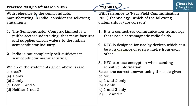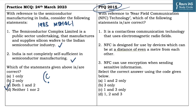On similar lines, we have framed one practice MCQ: with reference to semiconductor manufacturing in India, consider the following statements. The first statement says the Semiconductor Complex Limited is a public sector undertaking that manufactures and supplies silicon wafers to the Indian semiconductor industry — it is a correct statement as this PSU was established in 1983 in Mohali, Punjab, to promote the semiconductor industry in India, and it also provides technical support and consultancy services to domestic manufacturers. The second statement says India is not completely self-sufficient in semiconductor manufacturing — it is also correct as India does not have a semiconductor manufacturing base on a commercial scale and has to import all semiconductors from outside the country. Both statements are correct and the answer becomes C, which is both 1 and 2.